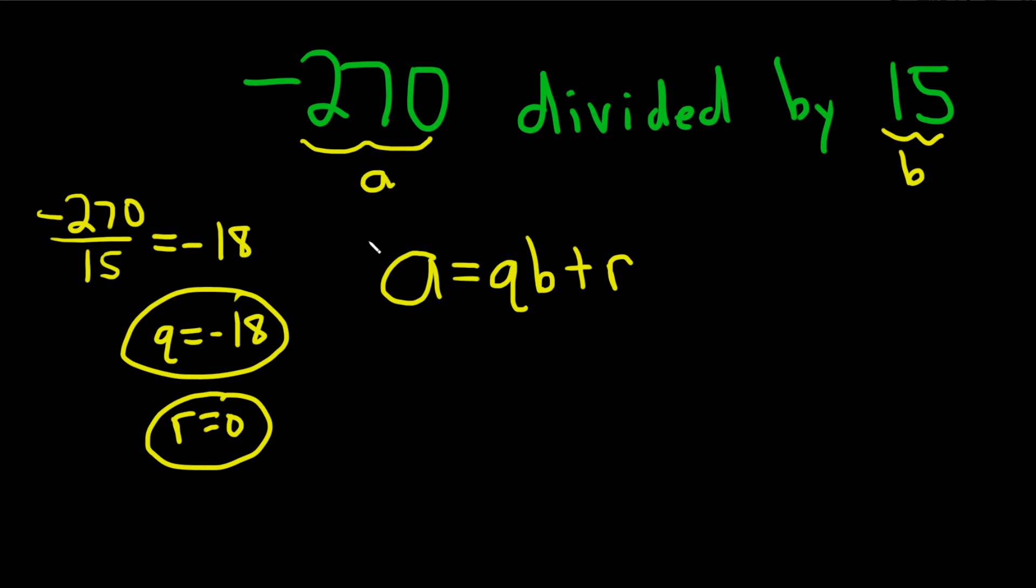Let's just go ahead and plug stuff in for fun. A is negative 270, Q is negative 18, B is 15, and then R is zero. You can check, right? If you check this, negative 18 times 15, you're going to get negative 270. So all is good.